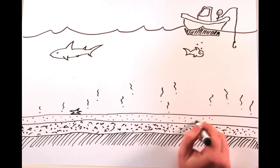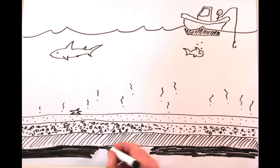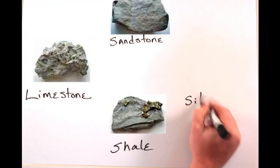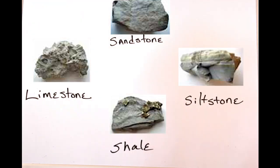Sedimentary rocks form from the accumulation of sediments in water or air. Sediments can be rock particles, animal remains, plant remains, or a mix of all of that. Limestone, sandstone, shale, and siltstone are all sedimentary rocks.